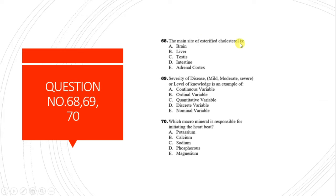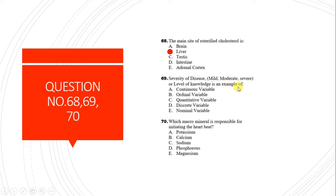Question 68: The main site of esterified cholesterol is the liver, because the liver is the main metabolic center. In the brain, there is no LCAT enzyme to form cholesterol esters, so cholesterol remains in free form in the brain.